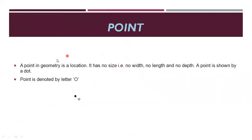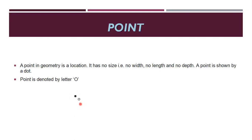The first point. A point in geometry is a location. It has no size, that is no width, no length and no depth. A point is shown by a dot. A point is denoted by the letter O. So a small dot made with a sharp pencil is called a point, and we represent it by the alphabet O.